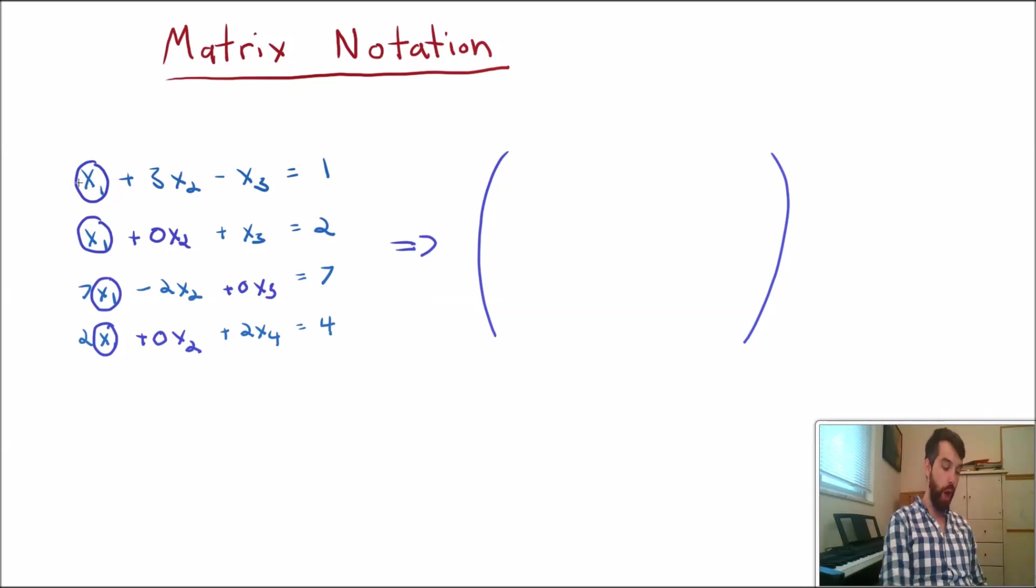So in the first column, it was 1 times x1, so that's a 1. 1 times x1 again, so that's a 1. 7 times x1, so that's a 7. And then 2 times x1, so that's a 2.